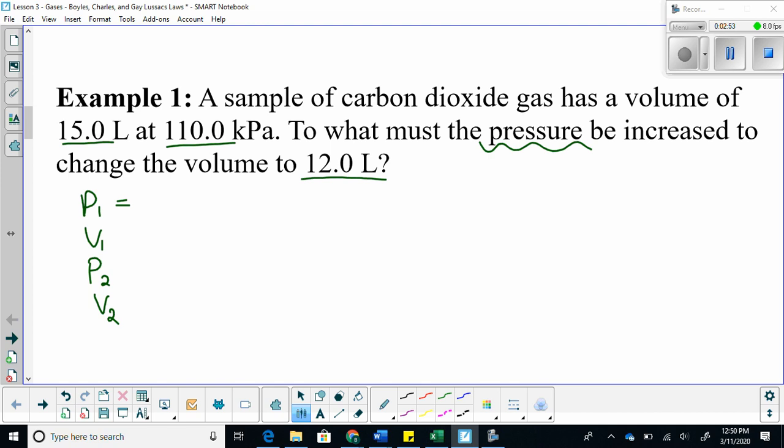P1, V1, P2, V2. P1 is equal to 110 kilopascals, V1 is 15 liters, P2 is what we are looking for, and V2 is 12 liters.